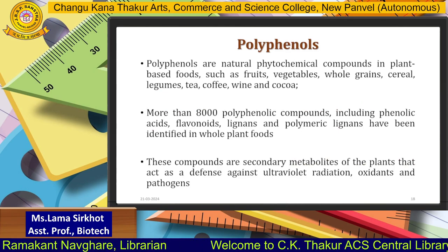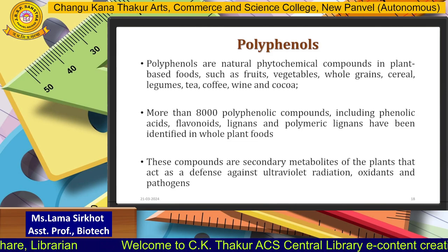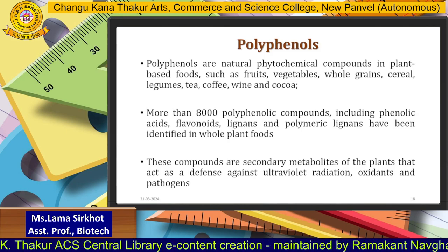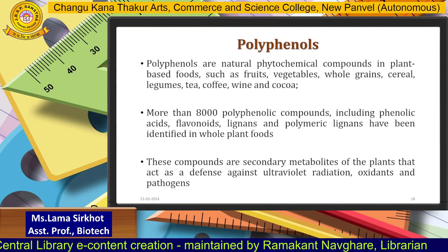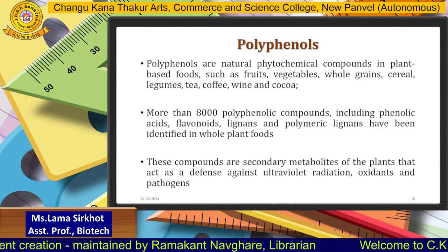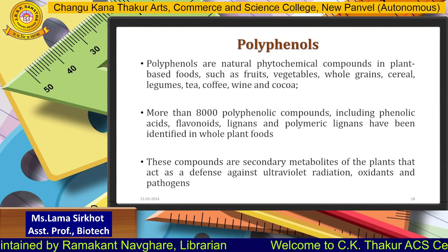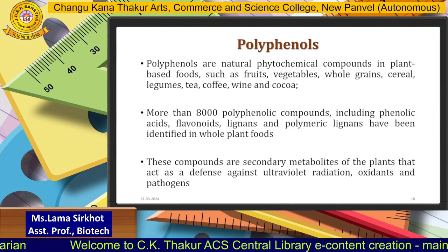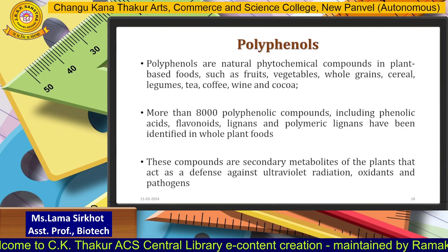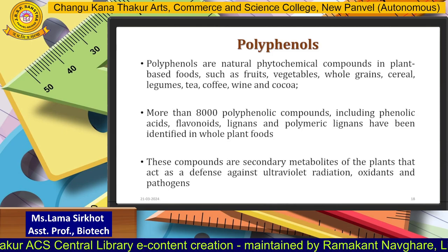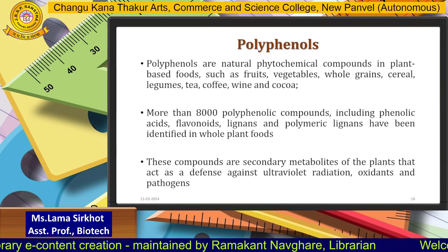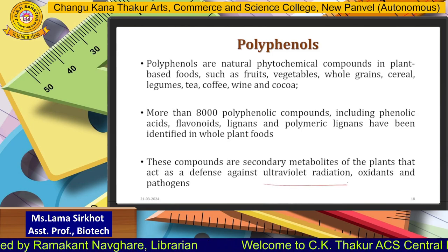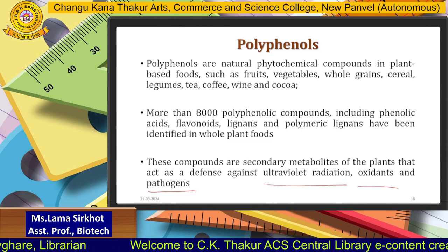Now we move to polyphenols, the last nutraceutical in this classification. Polyphenols are natural phytochemical compounds found in plant-based foods such as fruits, vegetables, whole grains, cereals, legumes, tea, coffee, wine, and cocoa. More than 8,000 polyphenolic compounds including phenolic acids, flavonoids, lignans, and polymeric lignans have been identified in whole plant foods. They are secondary metabolites of the plant, acting as a defense against UV radiation, oxidants, and pathogens. Secondary metabolites are plant products not directly involved in growth or reproduction, but important for plant defense — nicotine is also an example of a secondary metabolite.